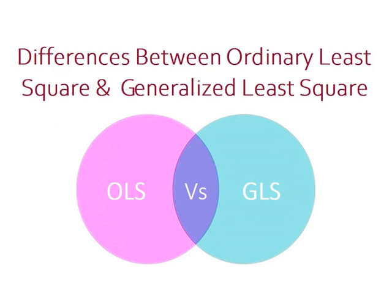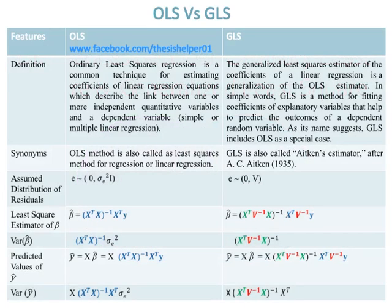Differences between Ordinary Least Squares and Generalized Least Squares: OLS versus GLS. Ordinary Least Squares regression is a common technique for estimating coefficients of linear regression equations, which describe the link between one or more independent quantitative variables and a dependent variable, in simple or multiple linear regression. The Generalized Least Squares estimator of the coefficients of a linear regression is a generalization of the OLS estimator.